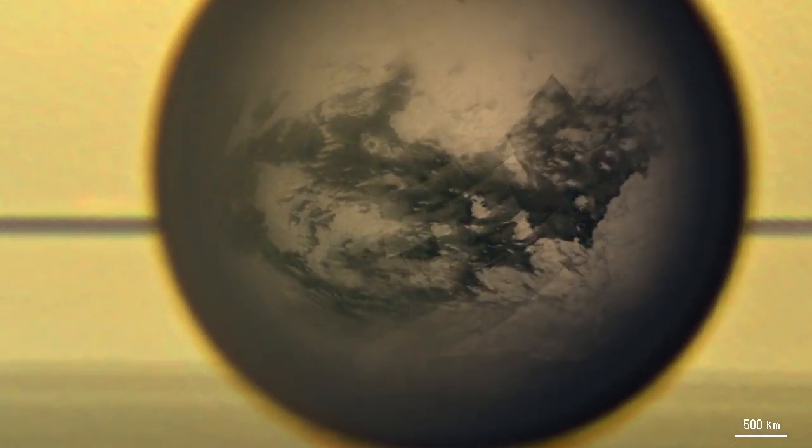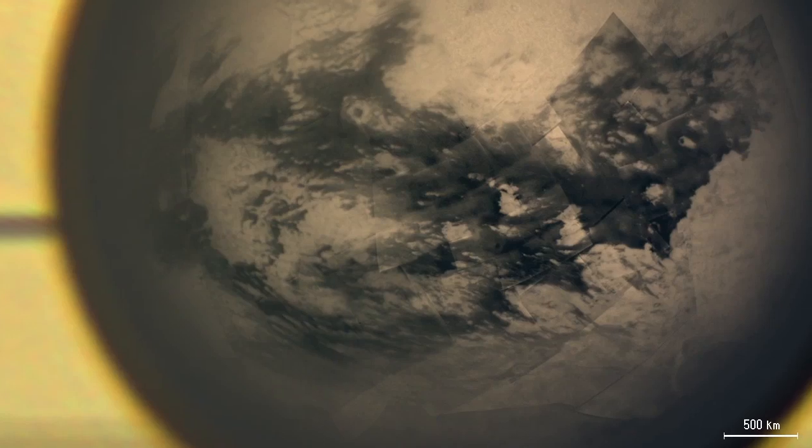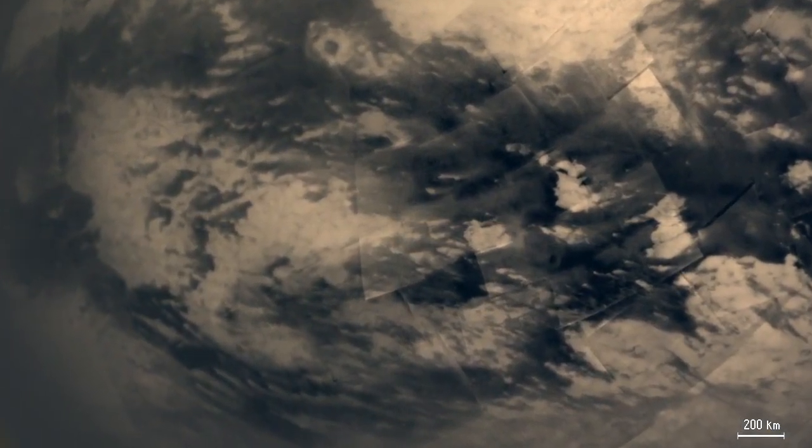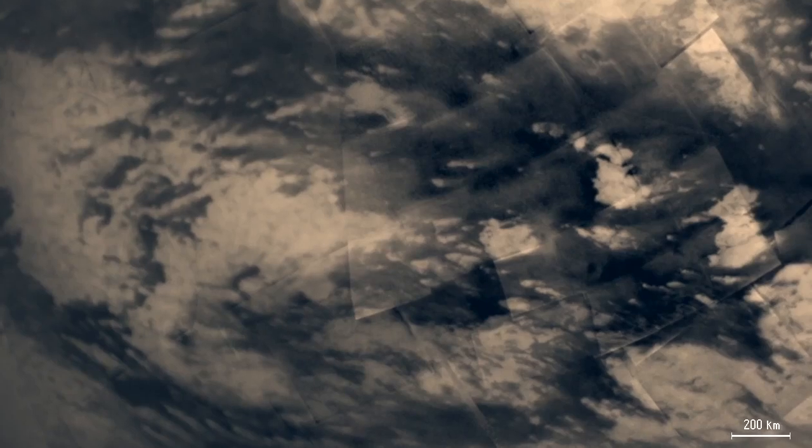Features on Titan's surface appear. The dark regions along Titan's equator are mostly dune fields. The brighter regions are highlands a few hundred meters high.